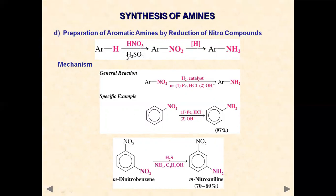Aromatic amines can be prepared by reduction of nitro compounds. Benzene undergoes electrophilic aromatic substitution: using nitric acid and sulfuric acid, we get nitrobenzene. Upon reduction of nitrobenzene we get aniline. For the general reaction, if we have a nitroarene, we can use hydrogen with a nickel catalyst, or iron in a first step followed by a base in a second step, to give the corresponding aromatic amine. Aromatic amines can thus be synthesized by reduction of the corresponding nitro compound.